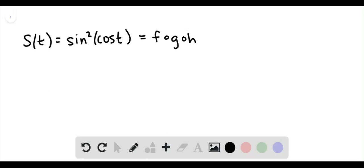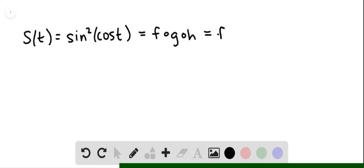Alright, here we see s of t and we want to break that down into a composition f of g of h. Another way to write that would be with parentheses f of g of h of t.